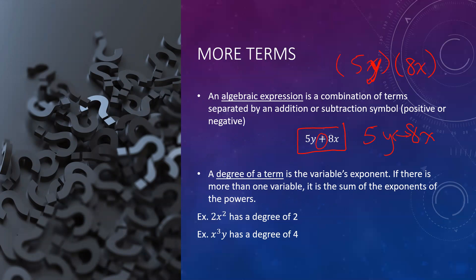The degree of a term is the variable's exponent. If you have one variable, it's just the exponent of that variable. If it's more than one variable, it's the sum of the exponents. For example, if I have 2x squared, the degree is 2. But if I have x cubed times y, the degree is 4, because we add the exponent of x (which is 3) and the degree of y. Even though you don't see it, y has a degree of 1 — it's really y to the power of 1. We're going to use this idea of an implied exponent of 1 a couple of times.